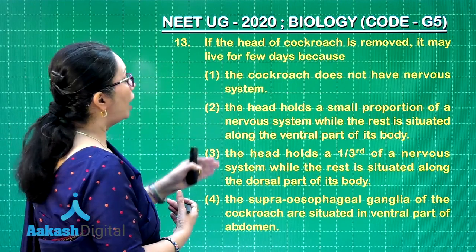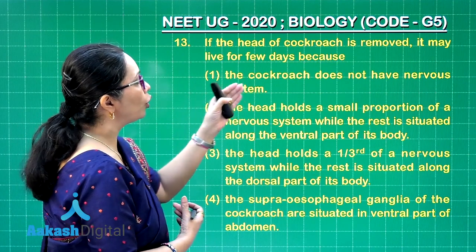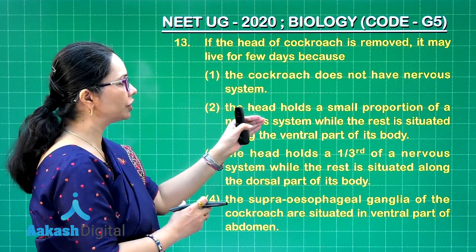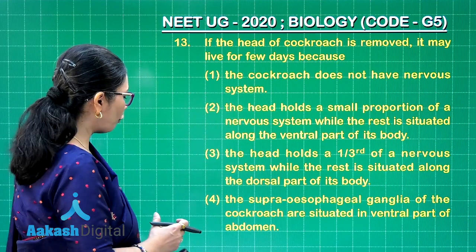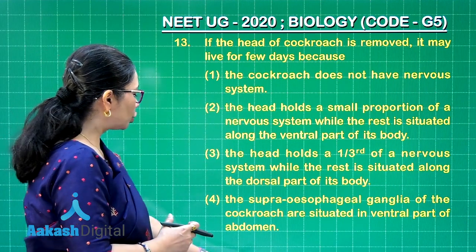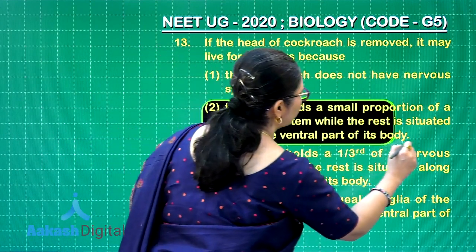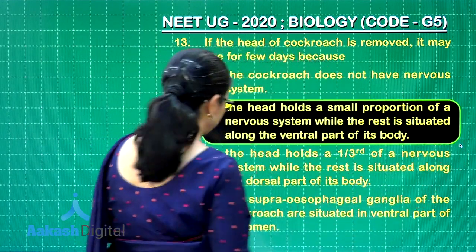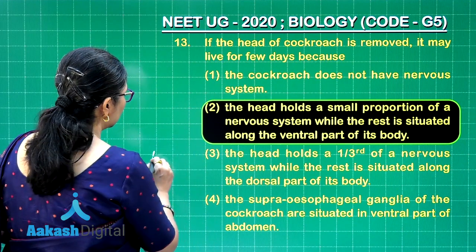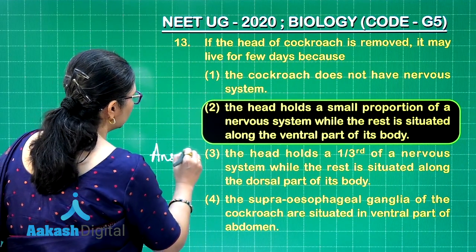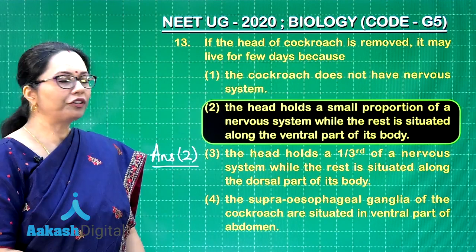Looking at the choices, option 2 states the head holds a small portion of the nervous system while the rest is situated along the ventral part of its body. This is absolutely the correct explanation for survival even after the head is severed, so the correct answer is option 2.